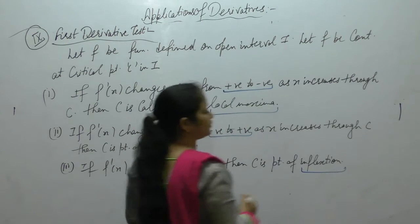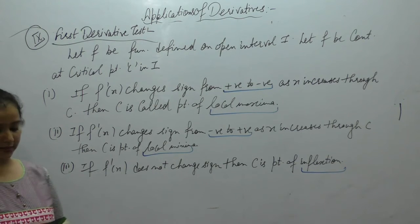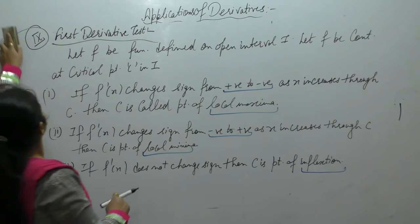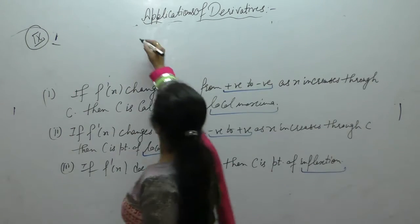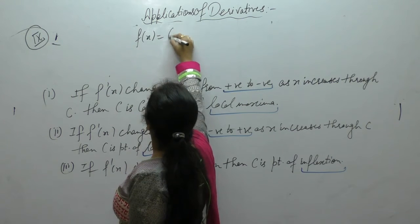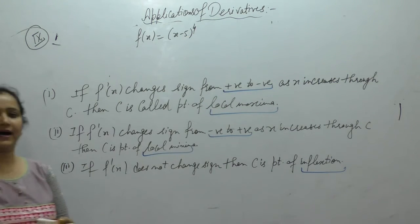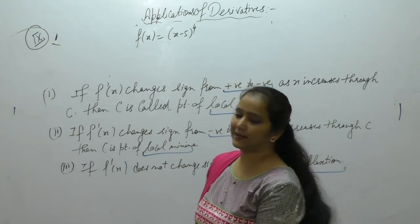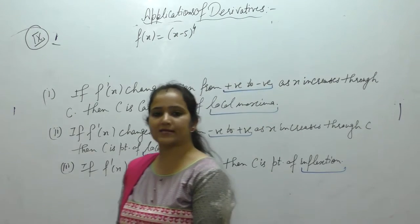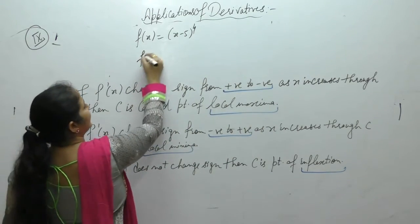Let us do one example. This is one of the important topics: local maxima or minima. Let f(x) = (x-5)⁴. We need to find the point of local maxima or local minima, and also find the local maximum and local minimum values.